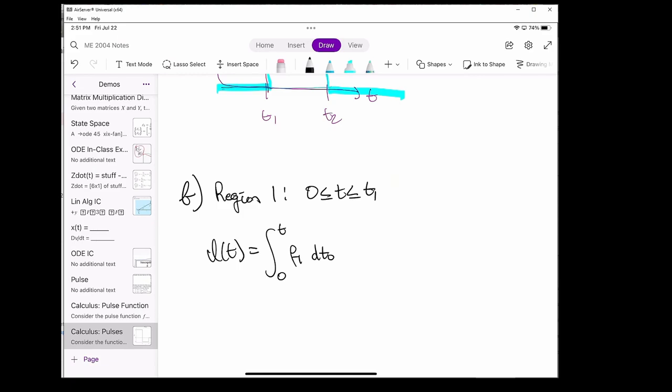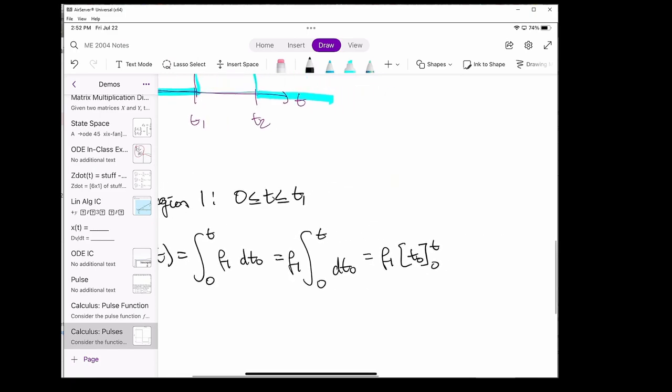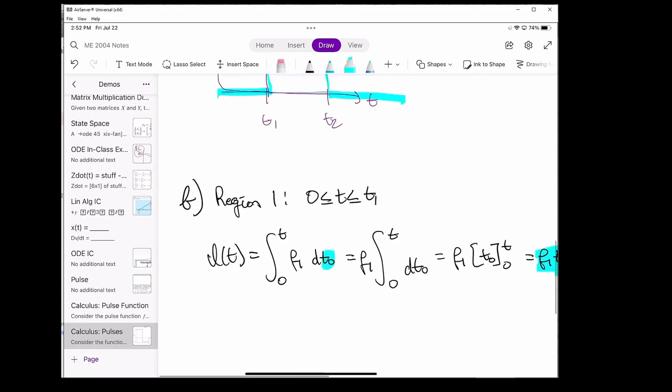The integral from 0 to t1 is just the integral from 0 to t of f1 dt0. Keep in mind that f1 is a constant, so we can move it outside the integral. The integral of dt0 is just t0, so what this really means is that the integral equals f1 times t0 evaluated from t to 0. When we evaluate that, we just get f1 times t. Keep in mind that our variable of integration is t0, not t. Here's our answer for the first region, and now let's move on to the second region.